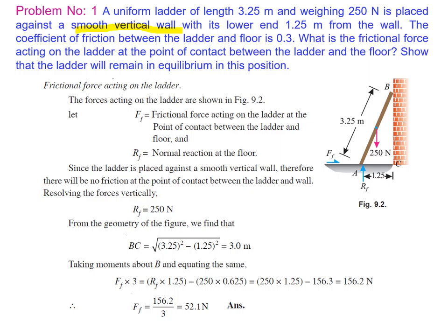Problem 1: A uniform ladder of length 3.25 meters and weighing 250 newton is placed against a smooth vertical wall with its lower end 1.25 meters from the wall. The coefficient of friction between the ladder and the floor is 0.3. Find the frictional force acting on the ladder at the point of contact between the ladder and the floor, and show that the ladder will remain in equilibrium in this position.